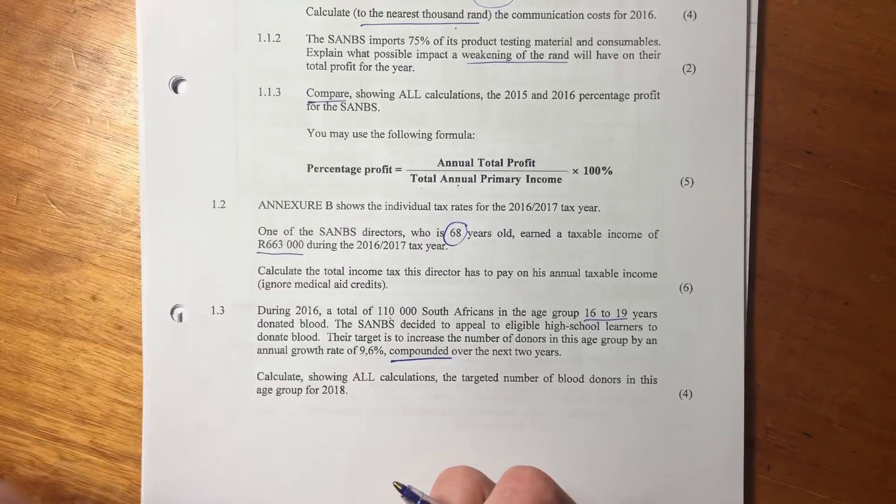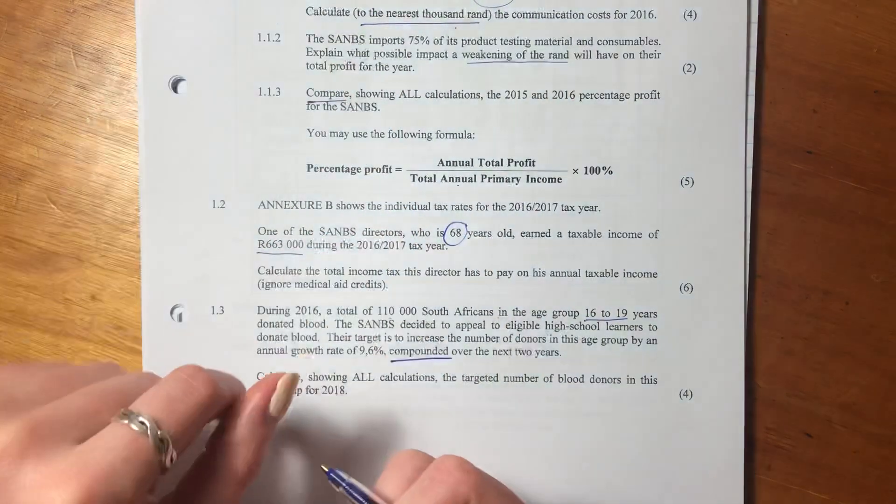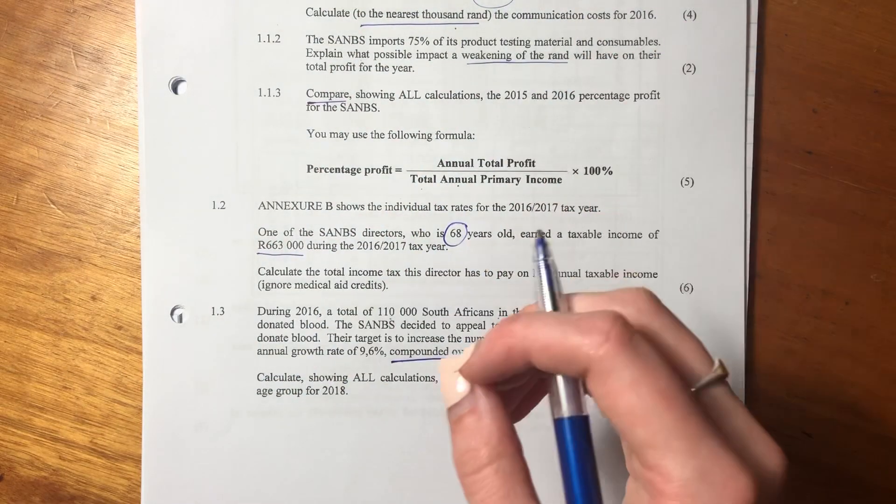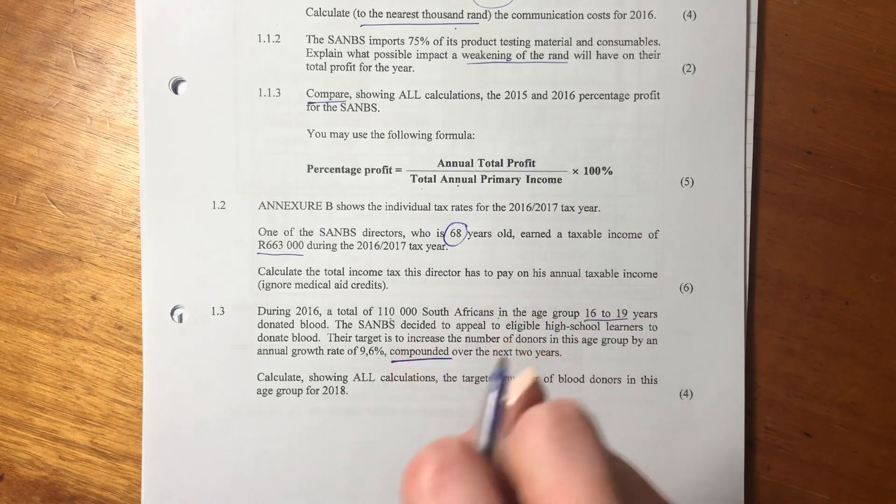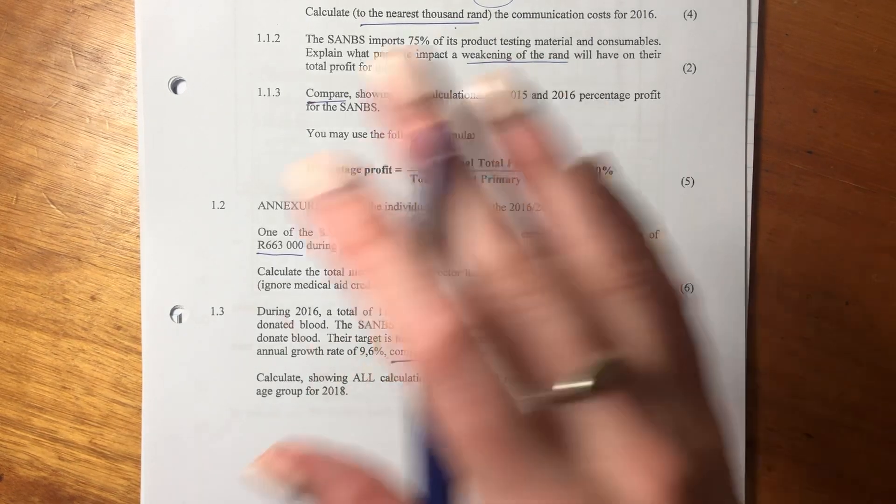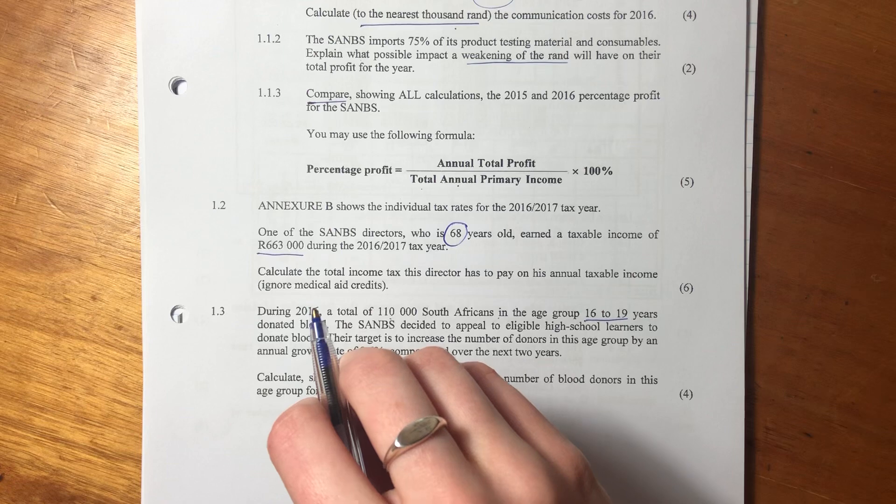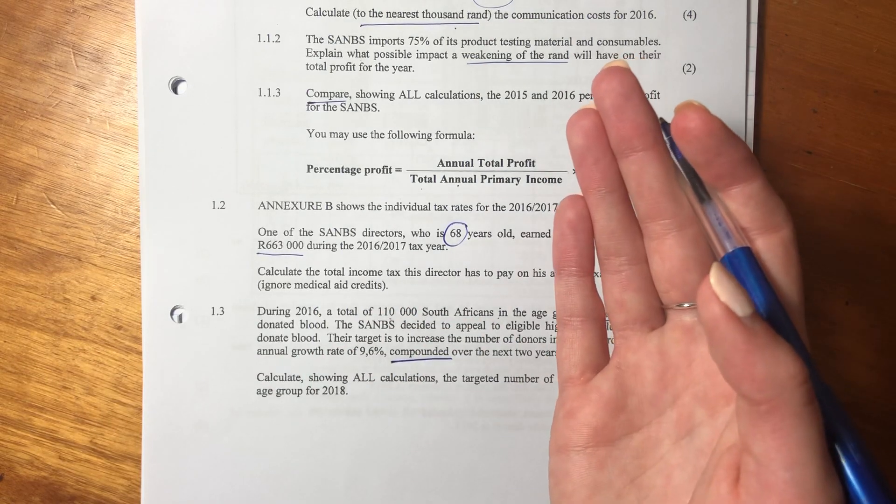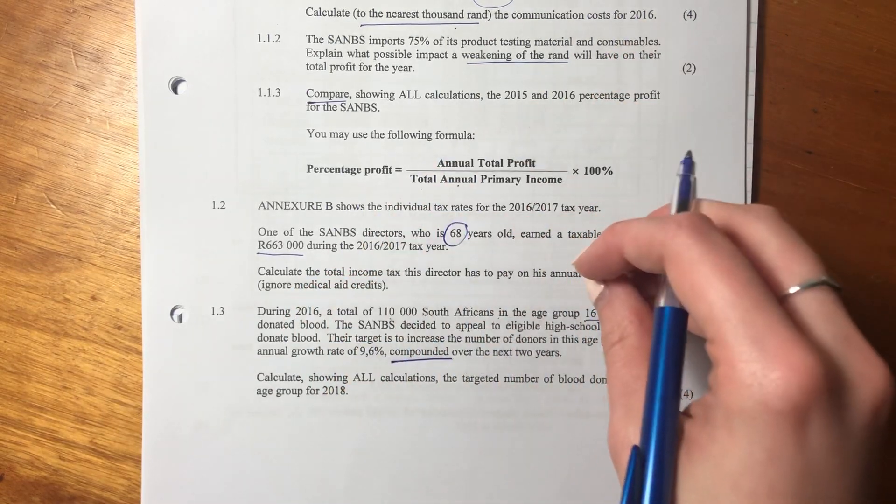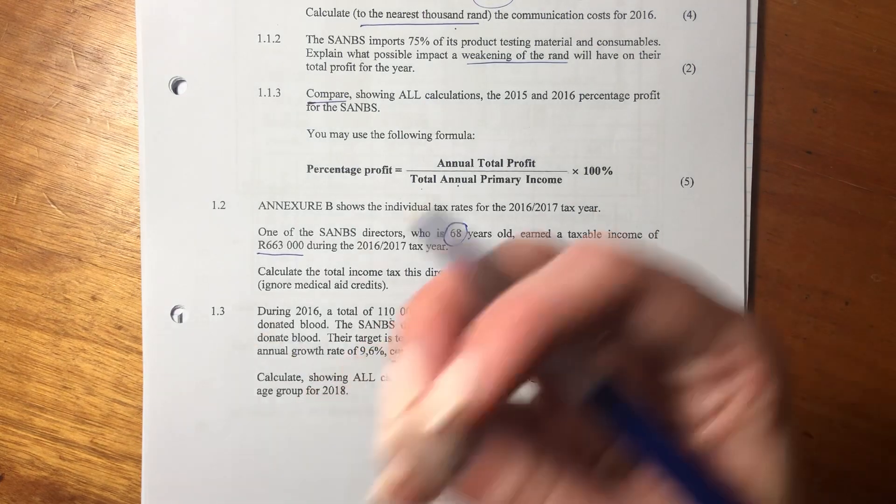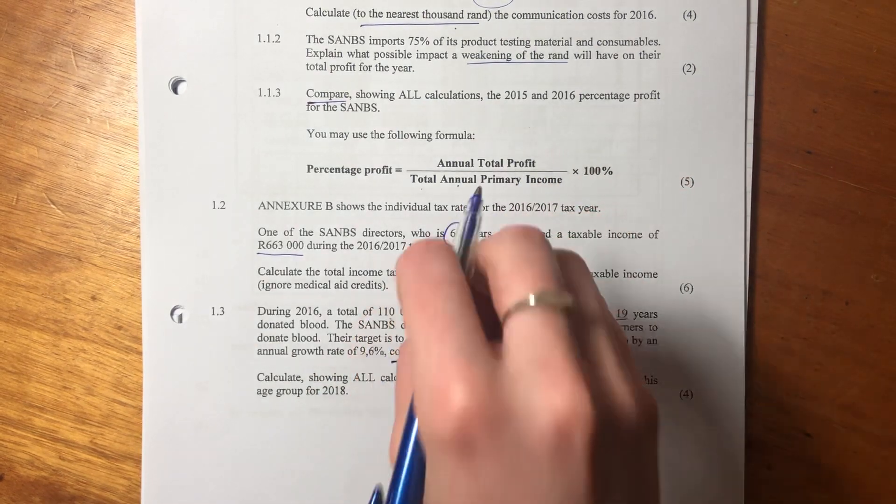Whereas with compound interest, you get interest on interest, right? So if I give you 100 rand and I say, okay, I'm going to give you 5% compound interest. The first year, you get 5% on 100, which gives you 105 rand at the end of the year. And then the second year, you're going to get 5% on 105, so you earn interest on interest.